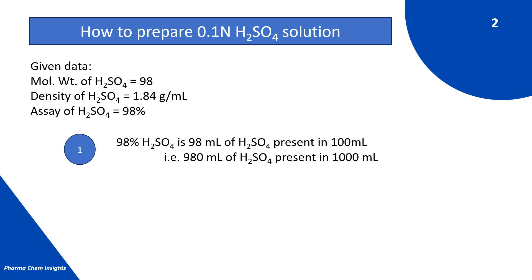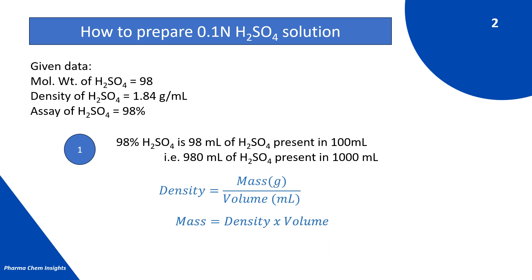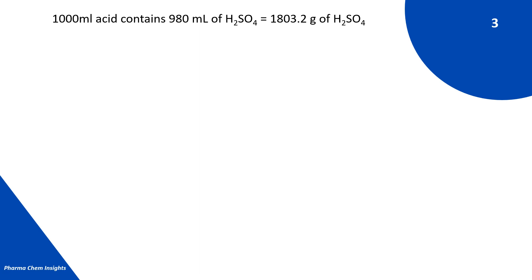98% H₂SO₄ means 98 ml of H₂SO₄ is present in 100 ml of acid, so 980 ml of H₂SO₄ will be present in 1000 ml of acid. We convert this 980 ml into grams using the formula: mass = density × volume, which gives 1.84 × 980 = 1803.2 grams. So 1000 ml of acid contains 1803.2 grams of H₂SO₄.